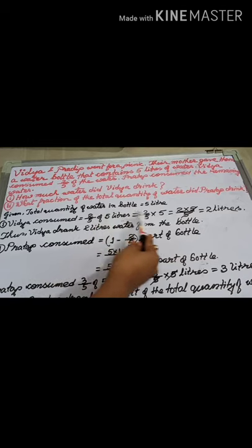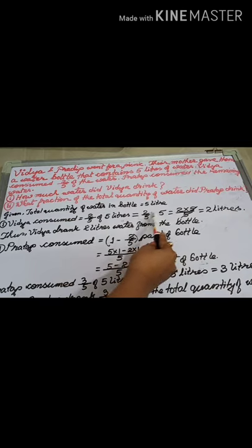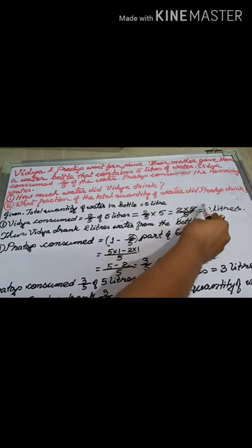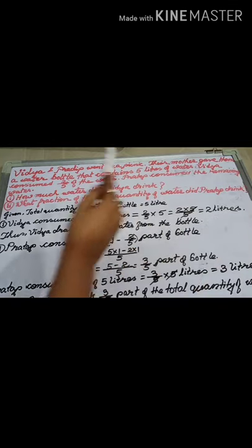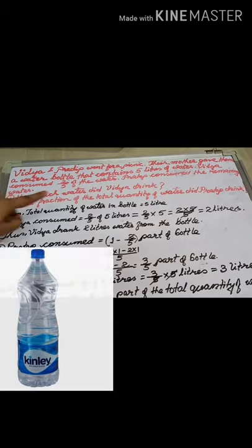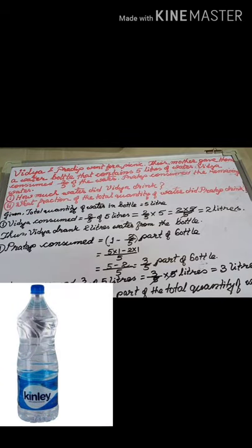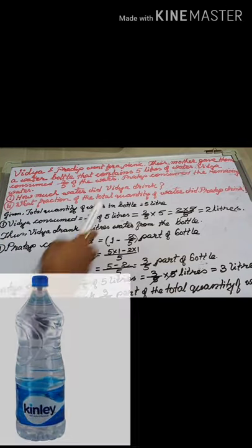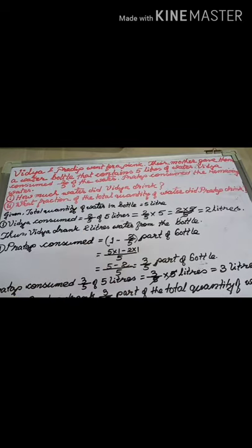So 2/5 is nothing but multiplication only: 2/5 into 5. The 5s cancel, so it will be 2 litres. That means from a total of 5 litres, Vidya consumed 2 litres, and Pradeep consumed the remaining water.